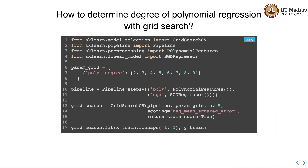We set up the pipeline with two steps: PolynomialFeatures and SGDRegressor. Then we call GridSearchCV on this pipeline with the specified parameter grid, setting the number of cross-validation folds to 5, the scoring metric to negative mean squared error, and return_train_scores to True. Finally, we call the fit method on the training set, passing the feature matrix and labels. This performs the grid search and finds the best value for the degree hyperparameter of polynomial features.